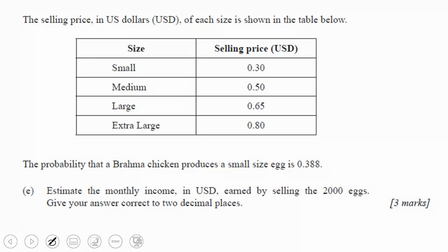The probability that Brahma chicken produces a small-sized egg is 0.388. Estimate the monthly income by selling the 2,000 eggs. So these are the prices of the eggs. Okay, and so the income is going to be the price times the number of eggs. So if you look at, we have 2,000 eggs, and the probability is 0.388.